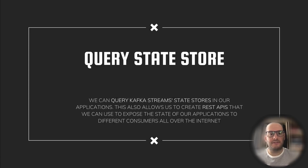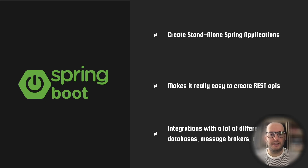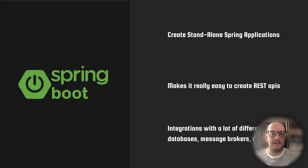Querying the state store in Kafka Streams is a great feature to have. It allows us to see the state that we have aggregated or stored, and we can also create REST APIs on top of it to expose it to different consumers over the internet. In this tutorial we're going to be using Spring Boot to create a REST API. Spring Boot is a framework for Java that we use to create standalone web applications. It makes it easy to create REST APIs and Spring integrates with many different databases, message brokers, etc. It's a very useful tool to know when you are a Java web developer.